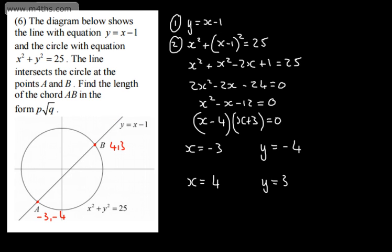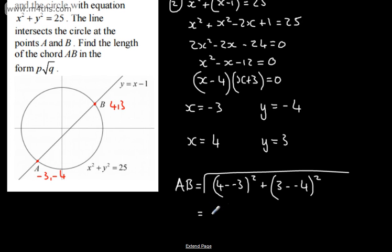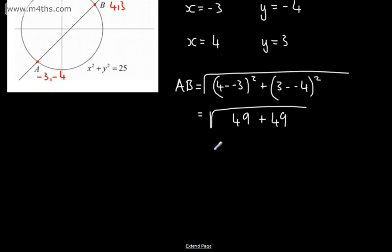So that's what we've got, and now all we need to do is find the distance. So we can say that AB, the distance, using the distance formula, is going to be the square root of (4 subtract negative 3) squared plus (3 subtract negative 4) squared. So what we've got here is 7 squared plus 7 squared, or 49 plus 49. So we need to write this in the form P root Q. We can write this as the root of 98, which we can write as 7 root 2.